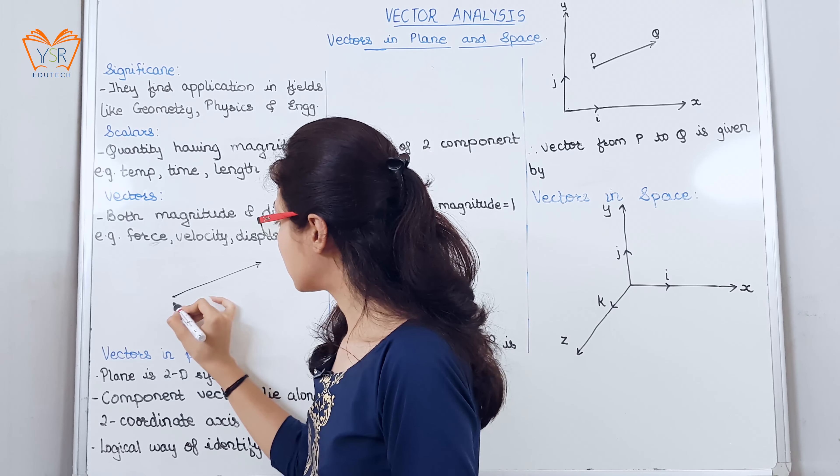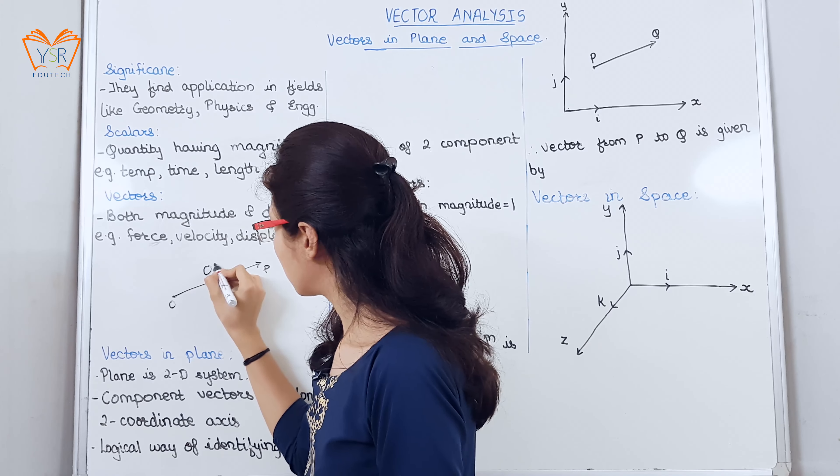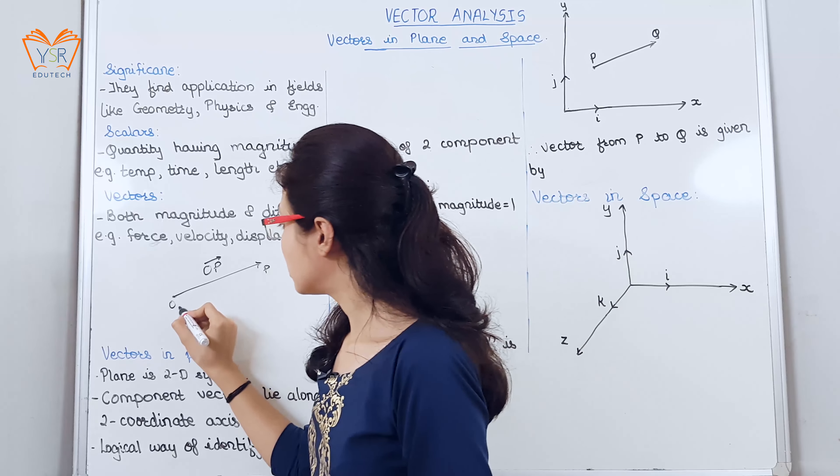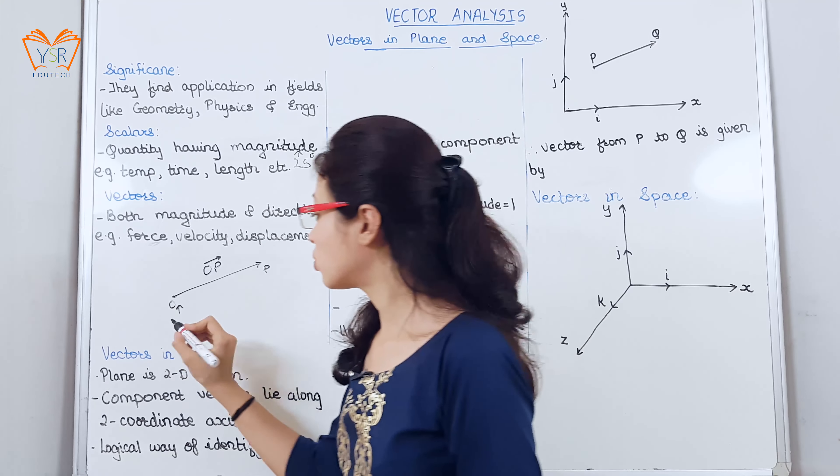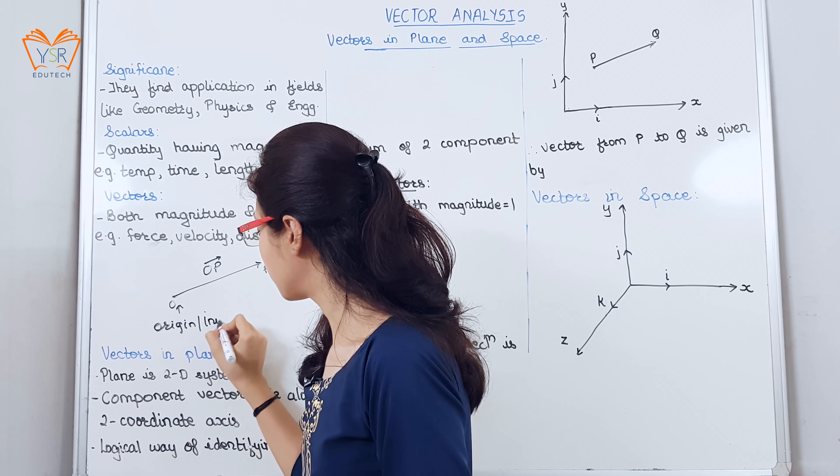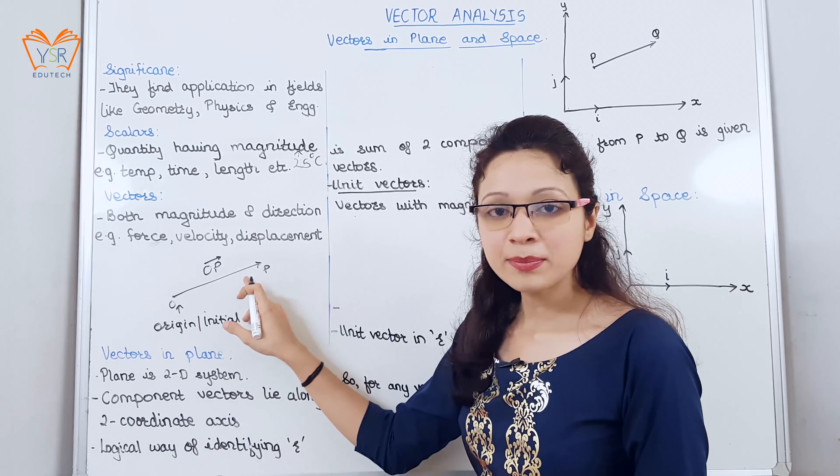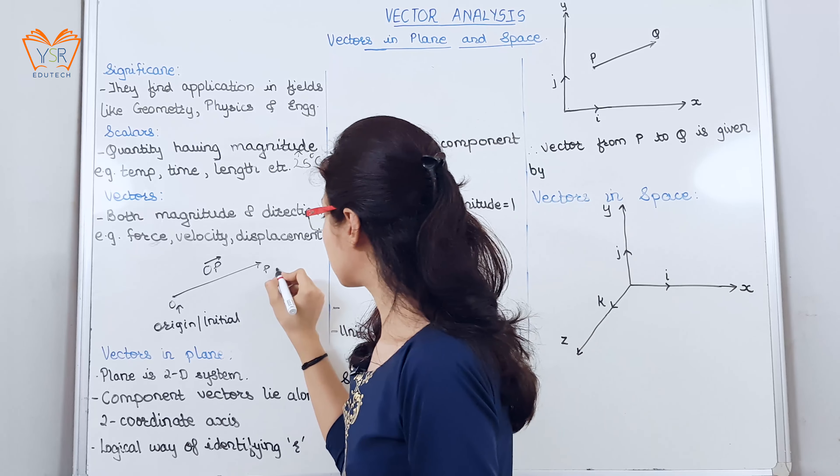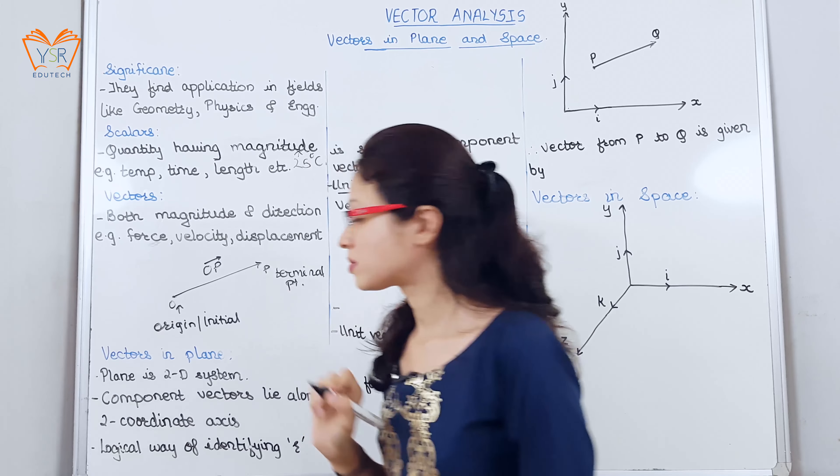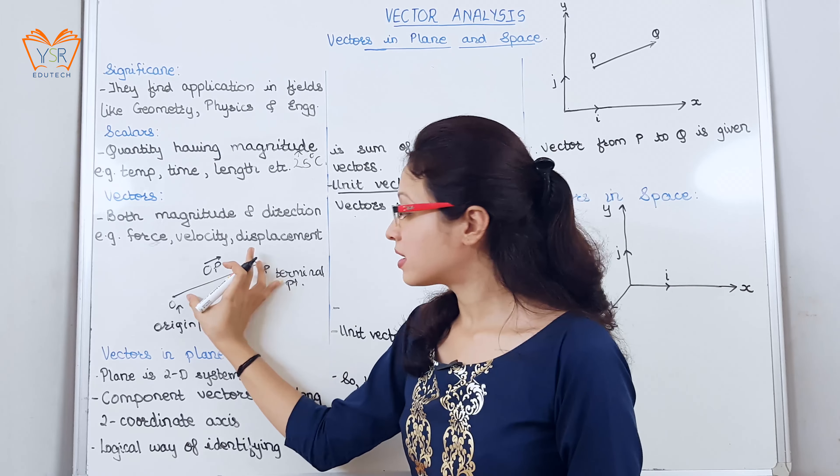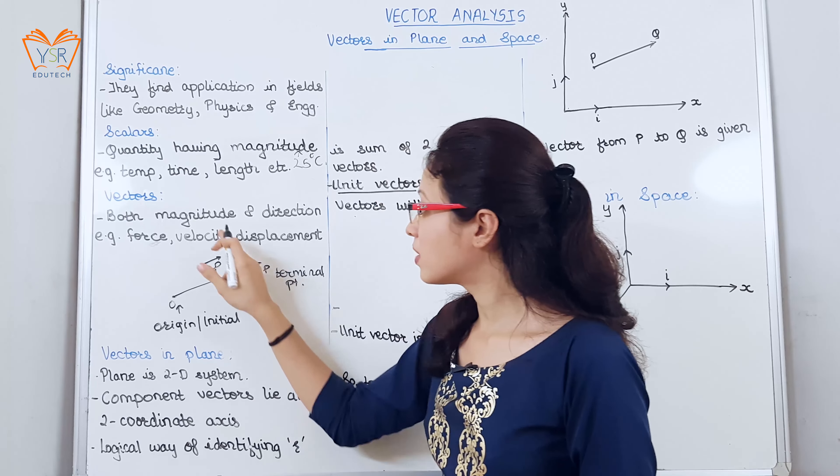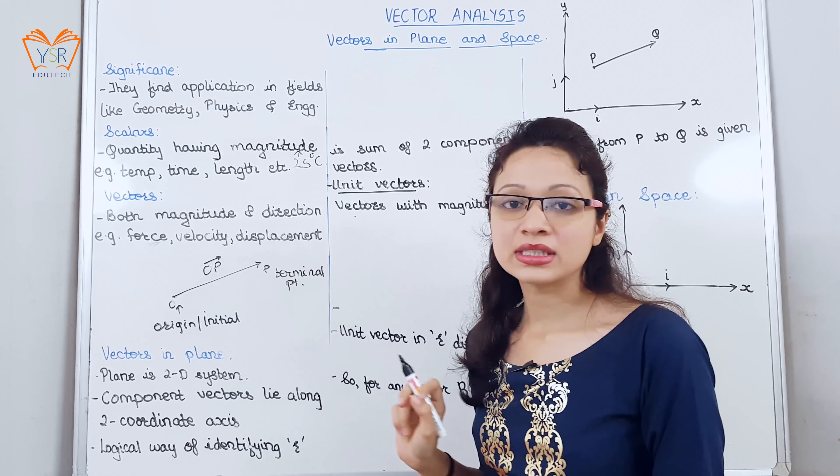So vectors are represented in this way. It is denoted by arrow on its head OP. This point is the tail point O that is also called as origin or initial point and the tip point P is the terminal point or terminus point. Magnitude of any vector is the length of that vector. So in this case length of OP will give us the magnitude. This arrow indicates the direction.